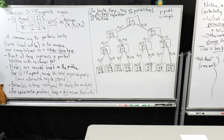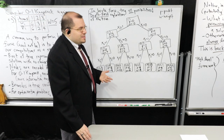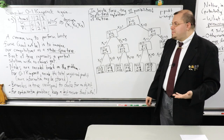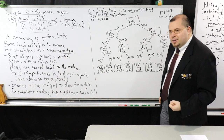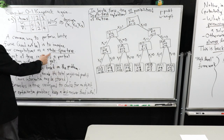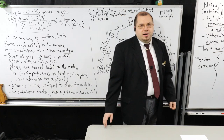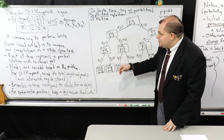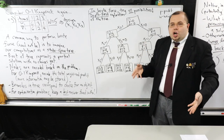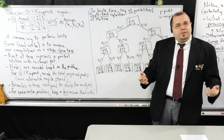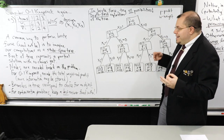Brute force can literally just mean enumerate all possibilities, so when somebody says brute force they may not necessarily be talking about a state space tree, but it's going to be very useful to think about it like one. The root of this tree represents a partial solution where no choices have been made yet. Nodes are encoded based on the given problem — for zero-one knapsack you can encode the total weight and total profit of the knapsack so far.